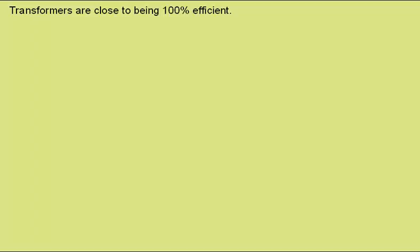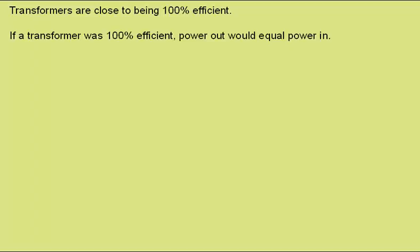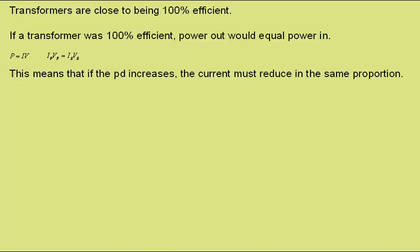Transformers are close to being 100% efficient. If a transformer was 100% efficient, the power out would equal the power in, and electrical power is given by current times potential difference. So the current in the primary coil multiplied by the potential difference across the primary coil will equal the current in the secondary multiplied by the potential difference across the secondary. This means that if the potential difference increases, as in a step-up transformer, the current must reduce in the same proportion — if we double the potential difference, we must halve the current.